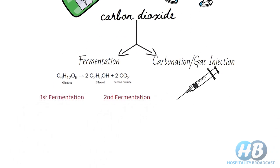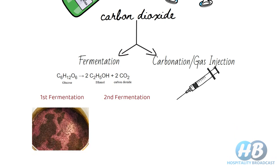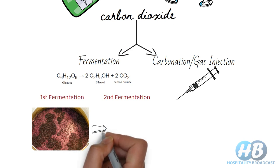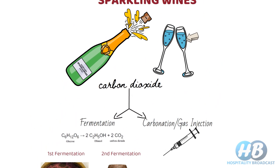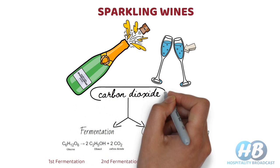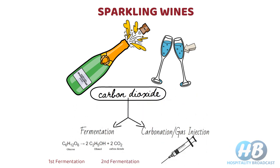To have this effect naturally, the wine is fermented twice: once in an open container to allow the carbon dioxide to escape into the air, as in any other winemaking process, and a second time in a sealed container or bottle where the gas is caught and remains in the wine.